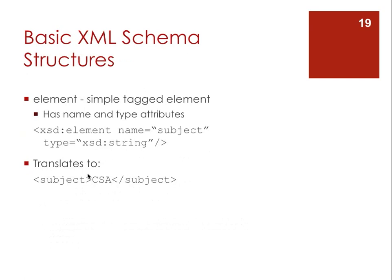One of the simplest things you can do is define your own element within the XML. For instance, you can describe an element called 'subject' and say what its type is going to be — this is similar to naming a variable in Java and declaring its type. If you create an element called 'subject' with type string, then in your XML document you can use that subject tag and the data contained within it must be a string.